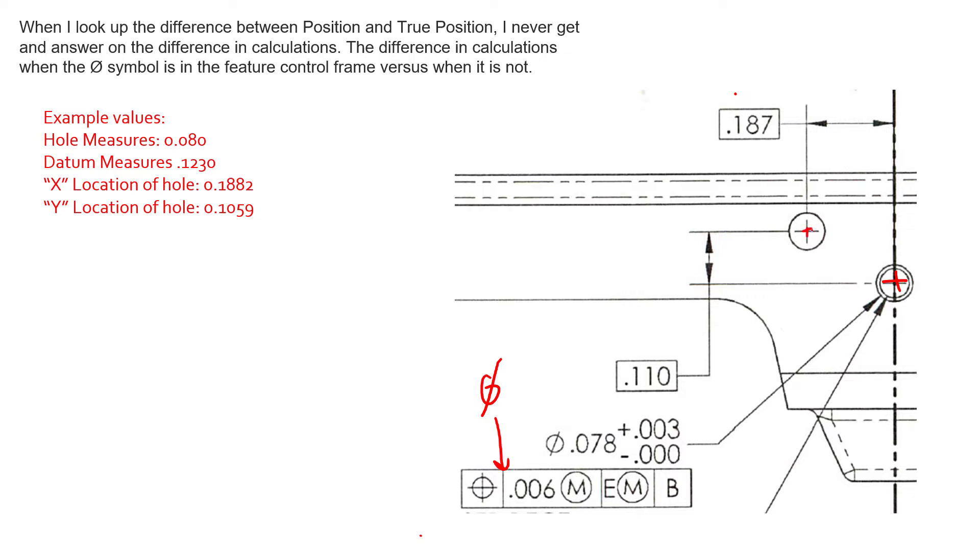But let's focus on just E. Again, E is going to give us the zero, zero, zero for our datum reference frame. And we know that true position exists 0.187 in x from our zero, zero, zero, and 0.110 in y from our zero, zero, zero. And so we know exactly where this hole should be with respect to our datum reference frame. And that location is called the true position.